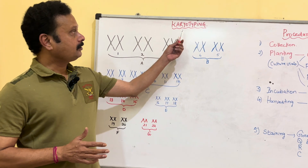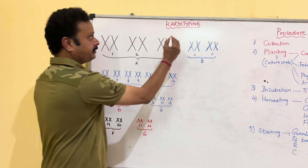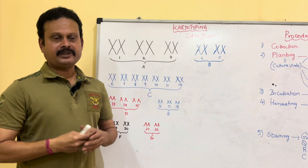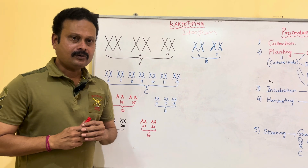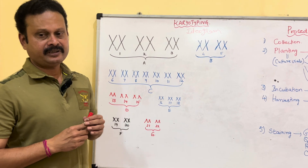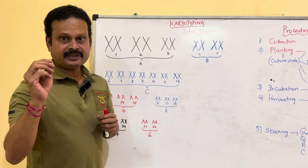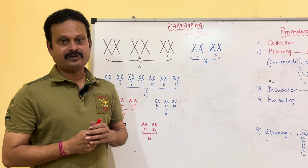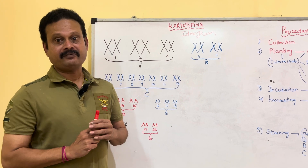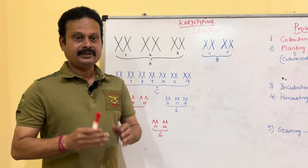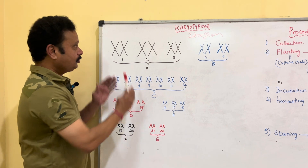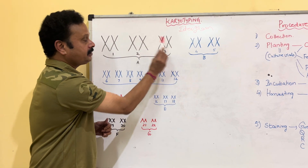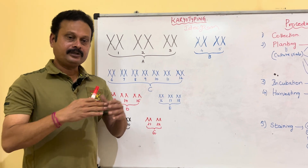Let us now study an important topic called Karyotyping, which is also called an Idiogram. This is a very important question for undergraduate and even postgraduate students. Karyotyping is a process of sequential arrangement of homologous pairs of chromosomes according to the descending order of height and according to the position of the centromere on a photostatic spread during metaphase of a cell division.